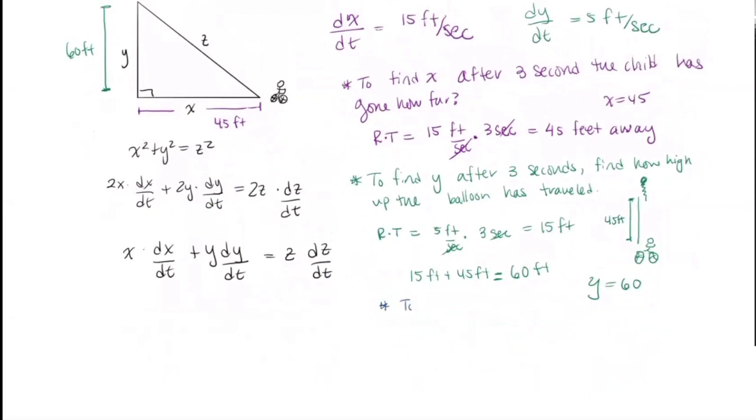So to find Z, again, let's use the Pythagorean Theorem. We have X squared plus Y squared equals Z squared. Well, we know that X is 45, Y is 60, and the sum of those squares equals Z squared. So doing a little algebra, we end up with Z equals the square root of 45 squared plus 60 squared. And now popping that into your calculator, you should get Z equals 75 feet.